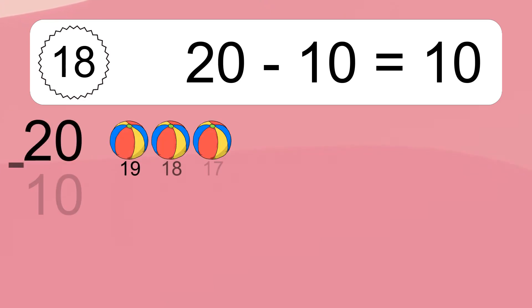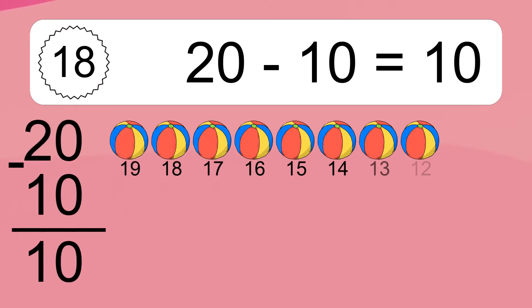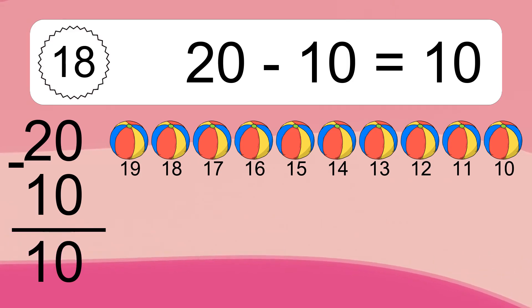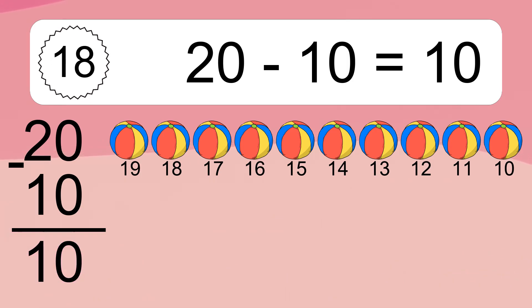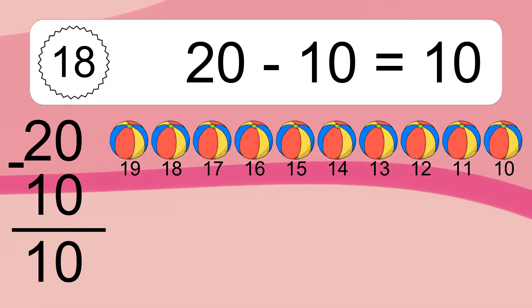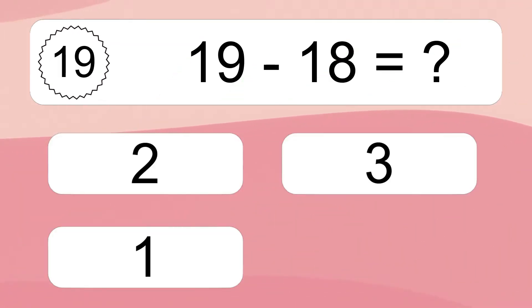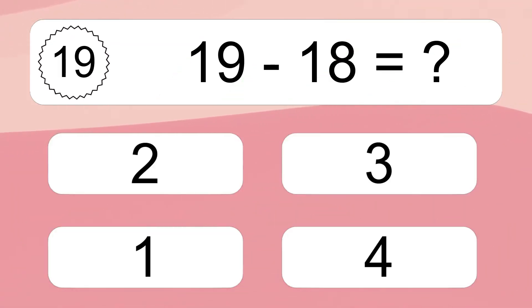20 minus 10 equals what? 20 minus 10 equals 10. Let's count it. 19, 18, 17, 16, 15, 14, 13, 12, 11, 10.